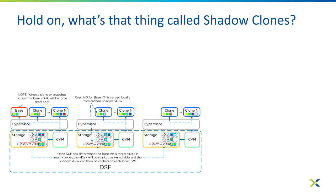That leads into a thing called Shadow Clones. What Shadow Clones allows us to do is a similar concept. If you're talking about VMware with link clones or instant clones, or in a Citrix world with Machine Creation Services, you have a base virtual machine — your master image or golden image. That's the image that your desktops reference to be able to boot up, to get Outlook.exe, to access their applications.